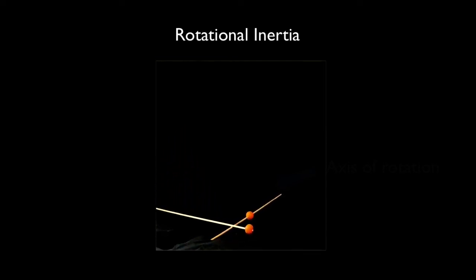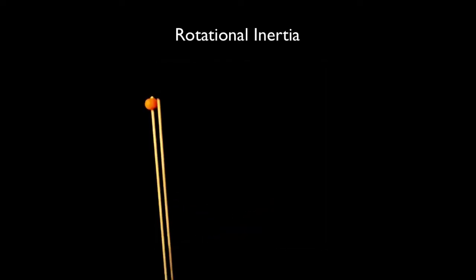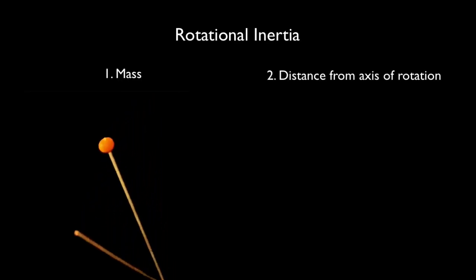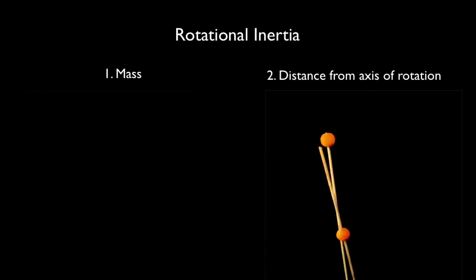Sorry to anthropomorphize, but the main point is that there are two ways to increase this thing we call rotational inertia. You can increase the mass or you can increase the distance from the axis of rotation.